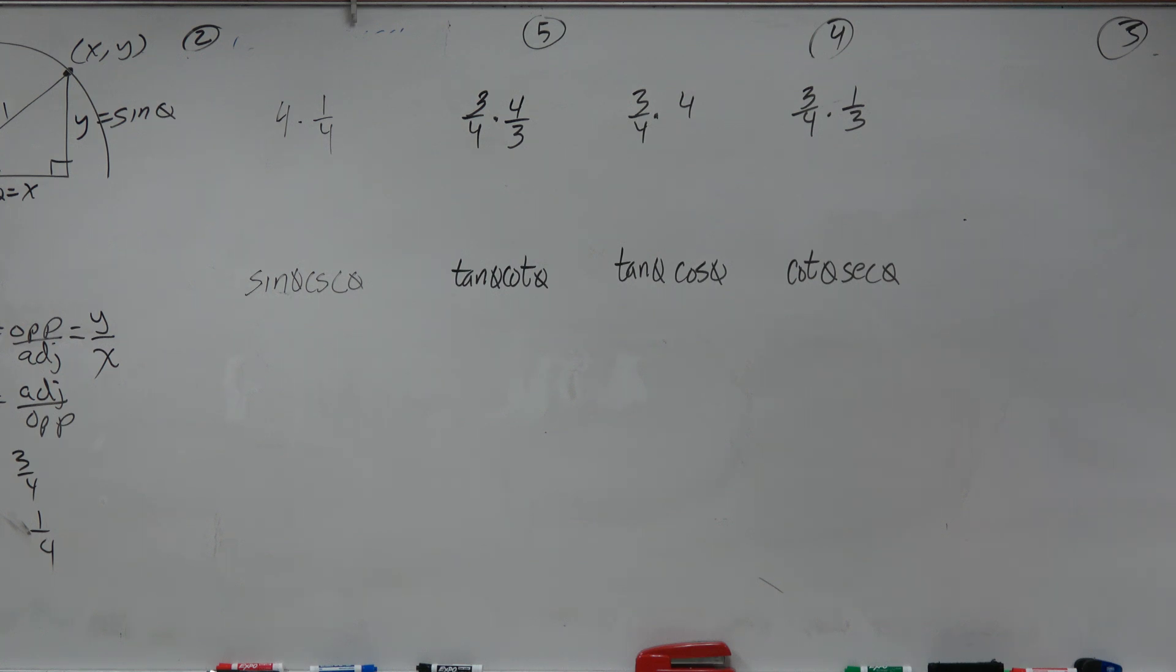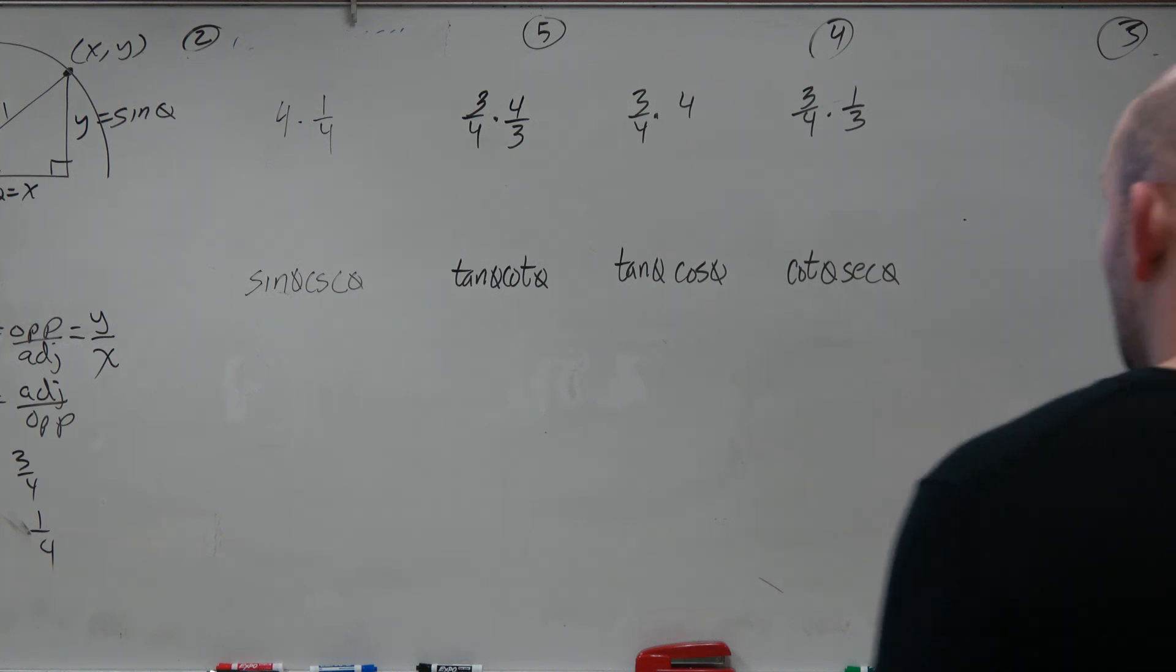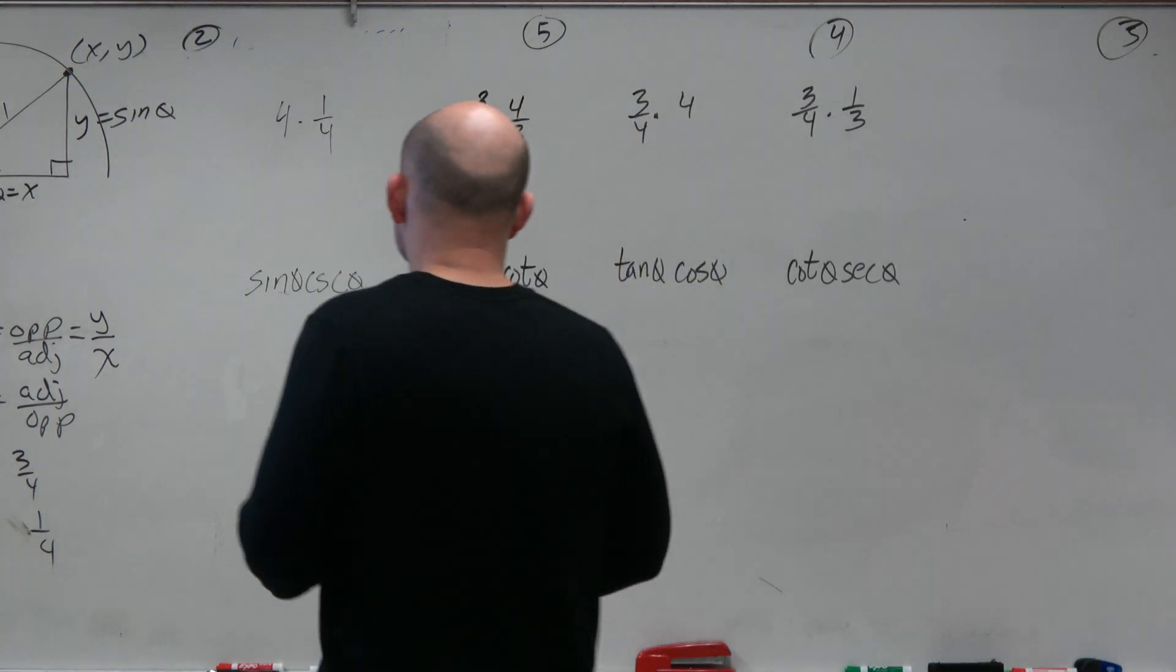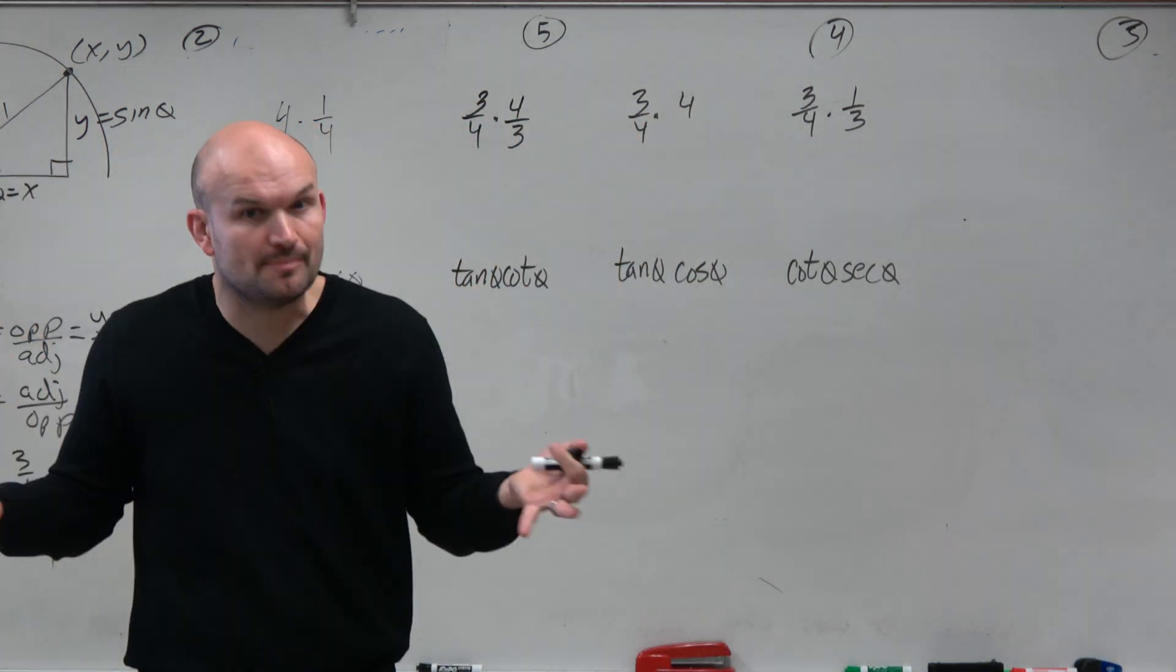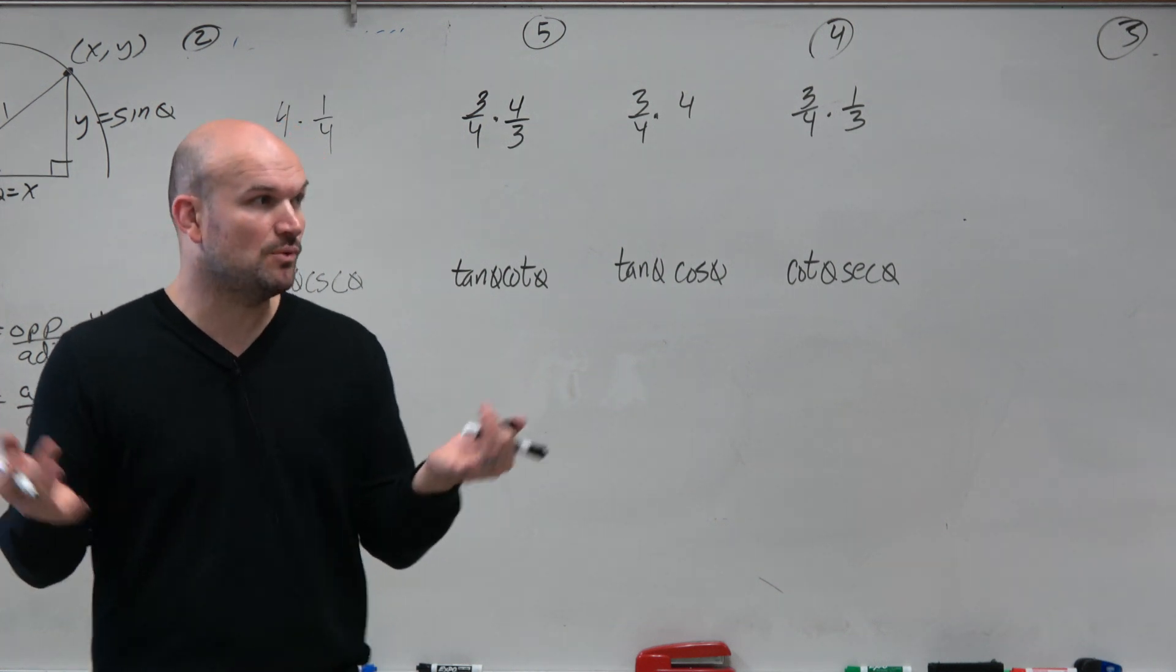All right. So in the first example, we have 4 times 1 fourth. And hopefully you guys recognize that this answer is obviously 1. We have 4 times 1 fourth. That's a number multiplied by its reciprocal. Agreed? We know the answer is 1.